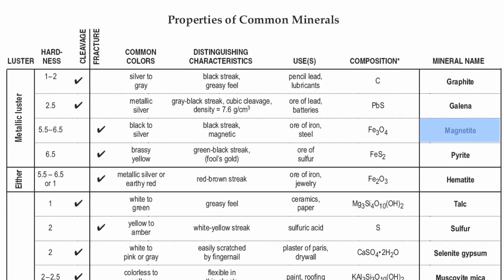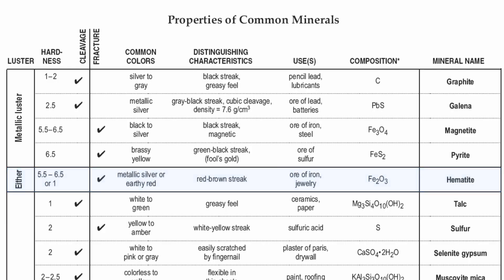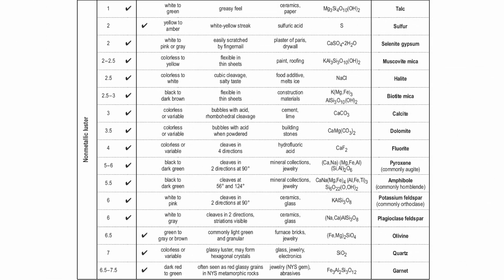We'll do that again down in the non-metallic minerals as well. Below your metallic luster minerals, you have a special mineral called hematite — and that can go either way. It could either be metallic or it can be non-metallic; it's very versatile in its formation. Below that is going to be the bulk of our chart, and that's going to be your non-metallic luster minerals.